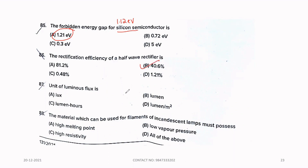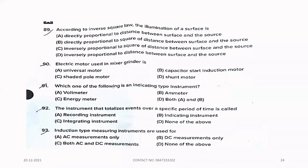Eighty-seven. Unit of luminous flux is, option B, lumen. Eighty-eight. The material which can be used for filament of incandescent lamp. All of the above. Option D is the correct answer. Eighty-nine. According to inverse square law, the illumination of a surface is, option C, inversely proportional to square of distance between surface and source.